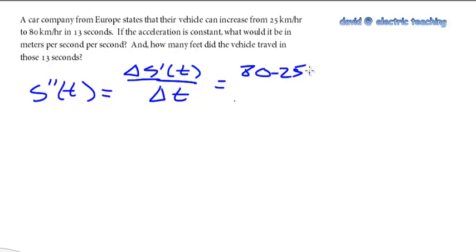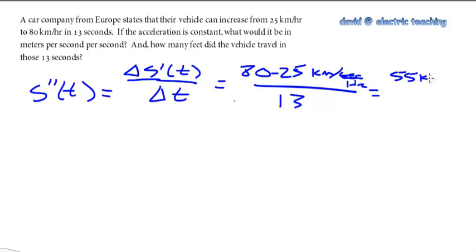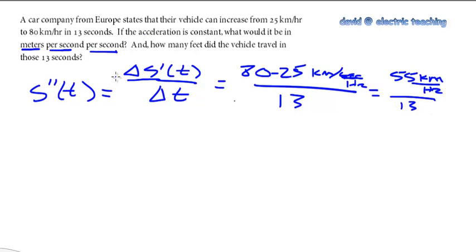If I look at the change from 80 to 25 kilometers per hour, that gives us 55 kilometers per hour as a change, and we're doing this across 13 seconds. We want our answer in meters — not kilometers — and in per second per second. The last 'per second' is dividing by 13 to make it per one second. The meters per second is the velocity change, and we need to convert this to meters per second per second.